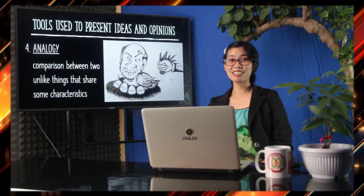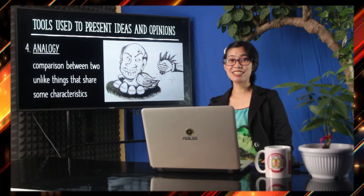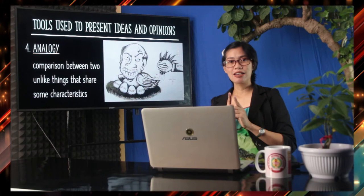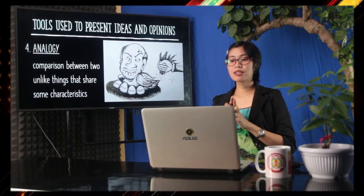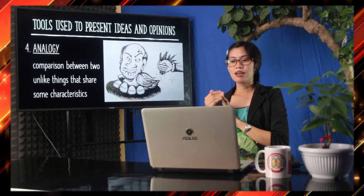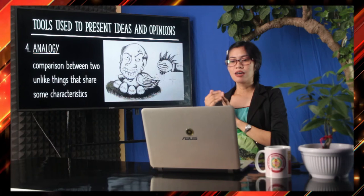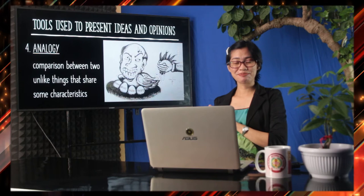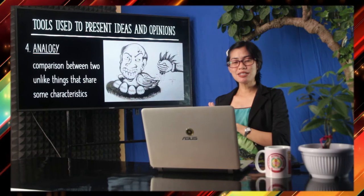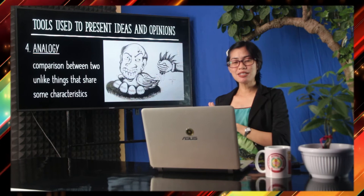Next is analogy. Analogy is a comparison between two unlike things that share some characteristics — two different things with similar characteristics. Now, what situation is being compared through this analogy in this editorial cartoon? We have a bird protecting its eggs — a bird trying to protect its eggs from those who want to attack or take them.